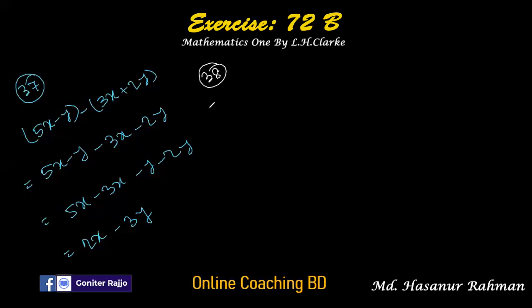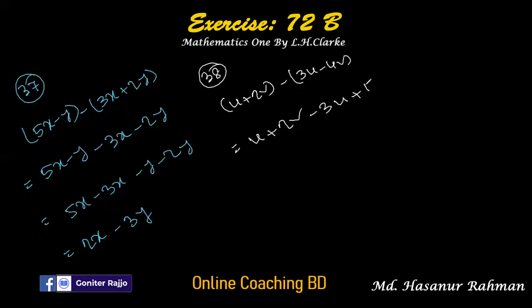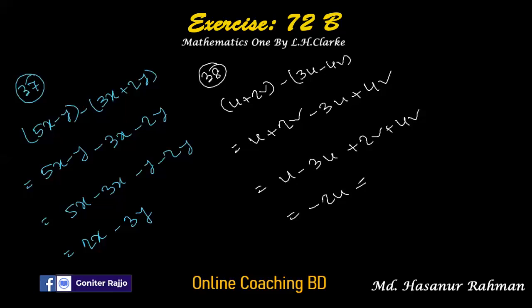Number 38 says u plus 2b minus 3u minus 4b. Removing the bracket: minus into minus 4b is plus 4b. Rearranging: u minus 3u plus 2b plus 4b. u minus 3u is minus 2u, and 2b plus 4b is 6b. Answer is minus 2u plus 6b.